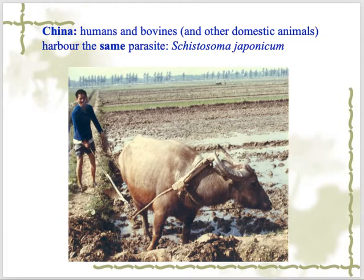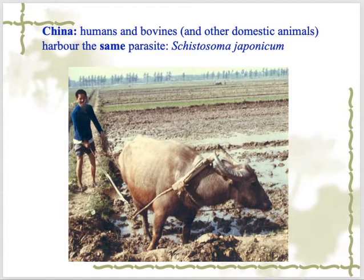For japonicum control, the host snail Oncomelania is targeted — eliminating their breeding sites and using chemicals to kill snails. Sanitation is improved. People who work in high-risk fields are given prophylactic medications and protective clothing. That is how this condition is controlled. That's all about schistosoma — thank you so much for listening, see you next week.